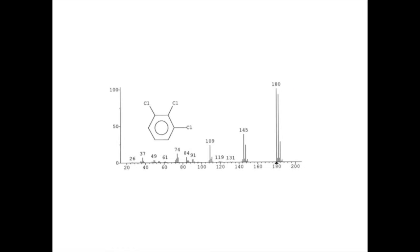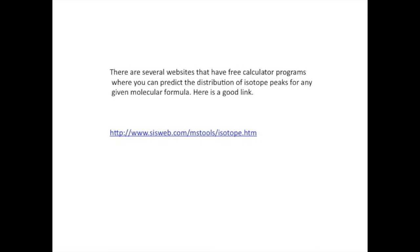Here we see a molecule with three chlorine atoms, and we see a combination of isotope peaks, which represents molecules with one heavy chlorine, two heavy chlorines, and three heavy chlorine atoms. This also follows a distinctive pattern of intensities. The intensity pattern for the distribution of heavy isotopes can be predicted from their natural abundances. There are several websites that have free calculator programs where you can predict the distribution of isotopes for a given molecular formula. Here is a good link.